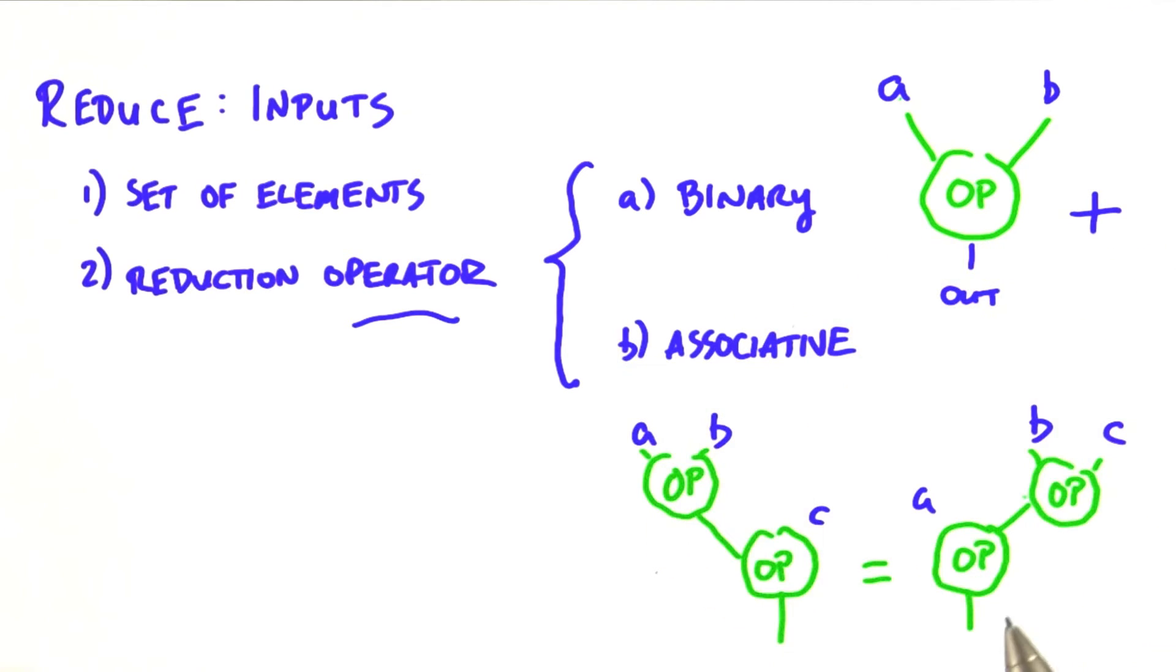2. Associative. Associativity means that if we have two or more operations in a row, a op b op c, the order of operations doesn't matter as long as the order of the operands aren't changed.